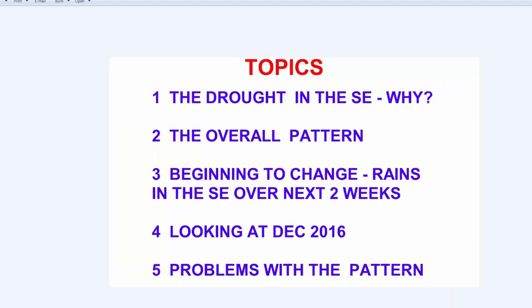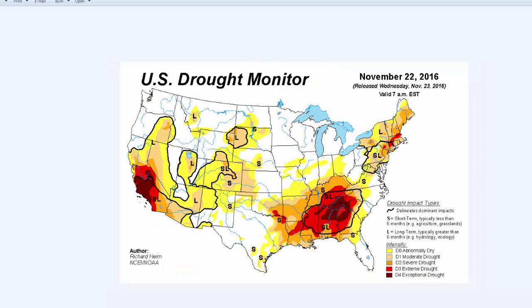We'll be talking about the drought in the southeast U.S. and why it has developed and the connection it has to the overall pattern. We'll be talking about the beginning of the pattern change, with some rain showing up in the southeast and over the eastern U.S. over the next two weeks — a couple of different potential significant rain events. We'll take a look at December 2016. And of course, even though we are seeing some slow evolution in the pattern, there are still a lot of problems before we can get really excited about the winter pattern setting up. So let's get started by taking a look at the drought map.